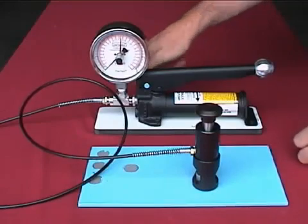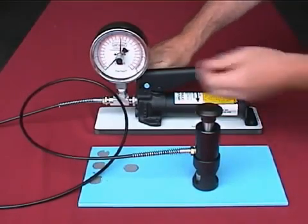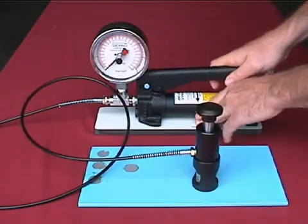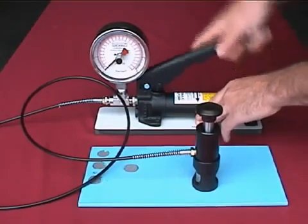Close the pressure valve on the pump tightly. Turn the red drag indicator on the pressure gauge to zero.